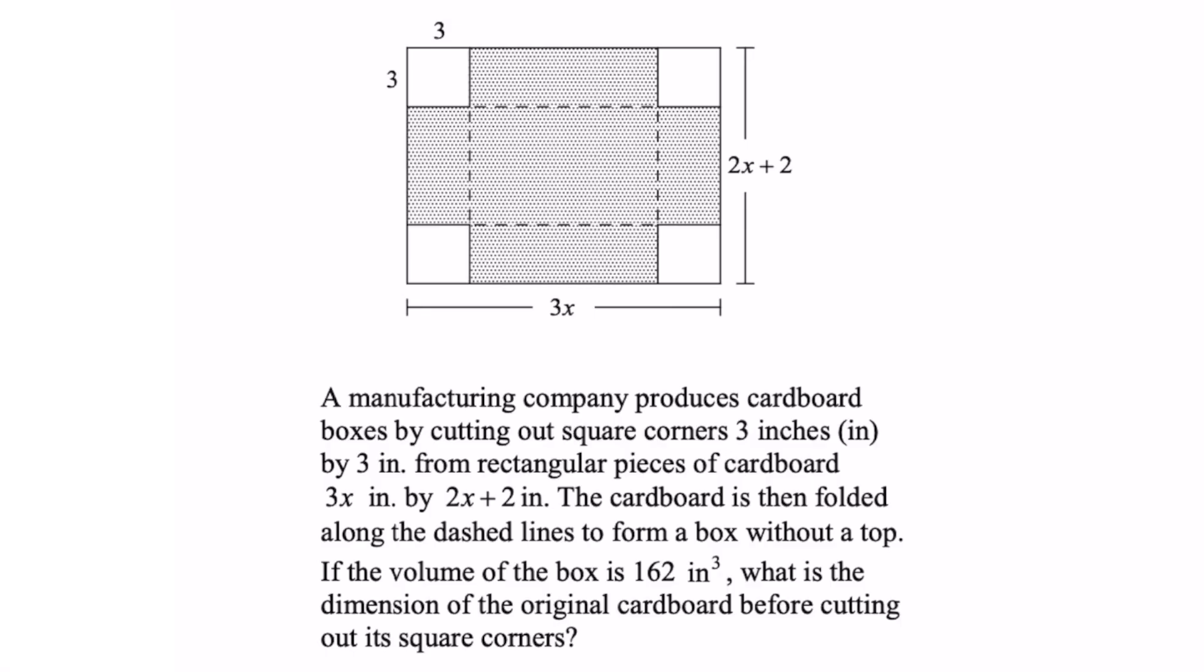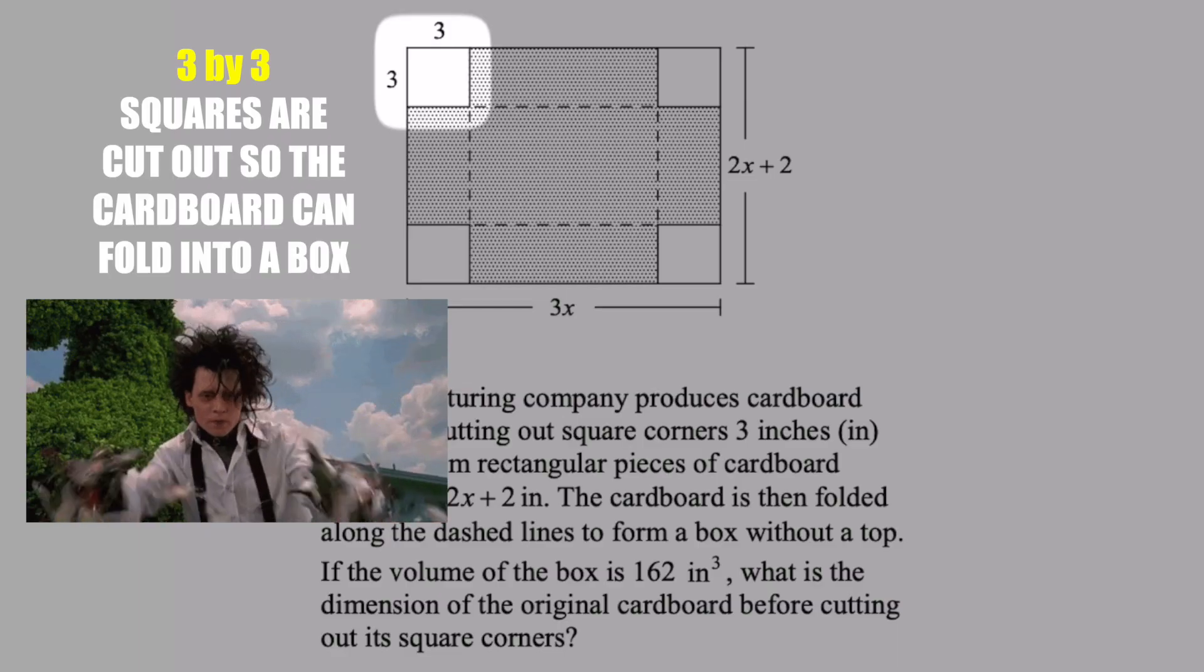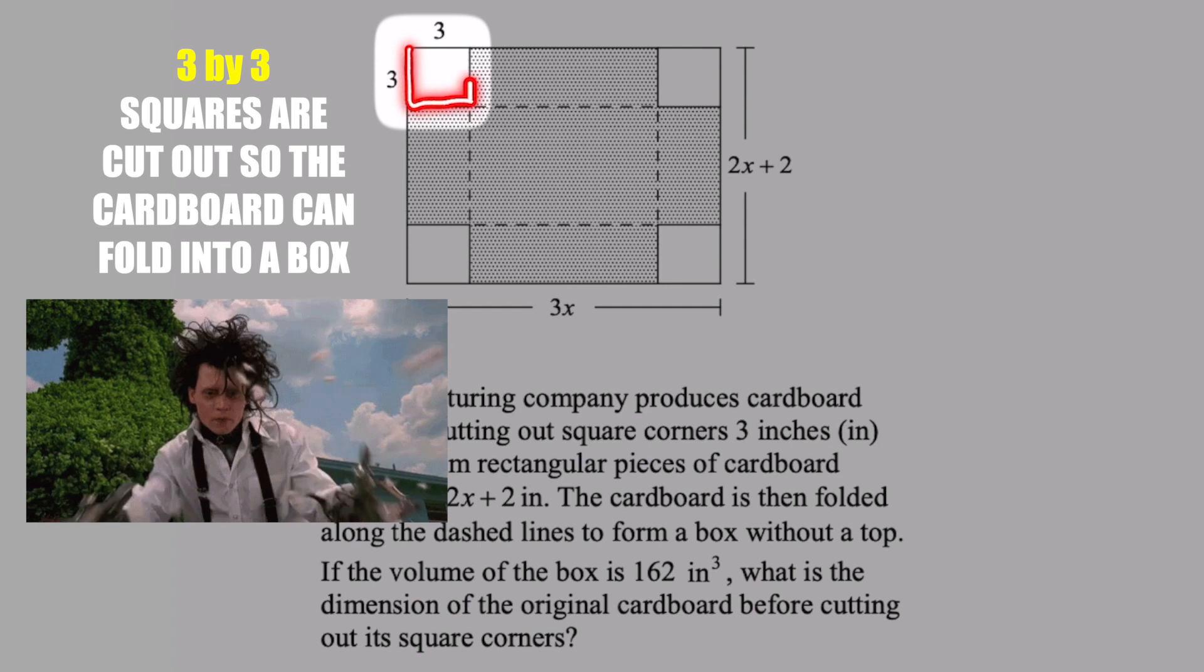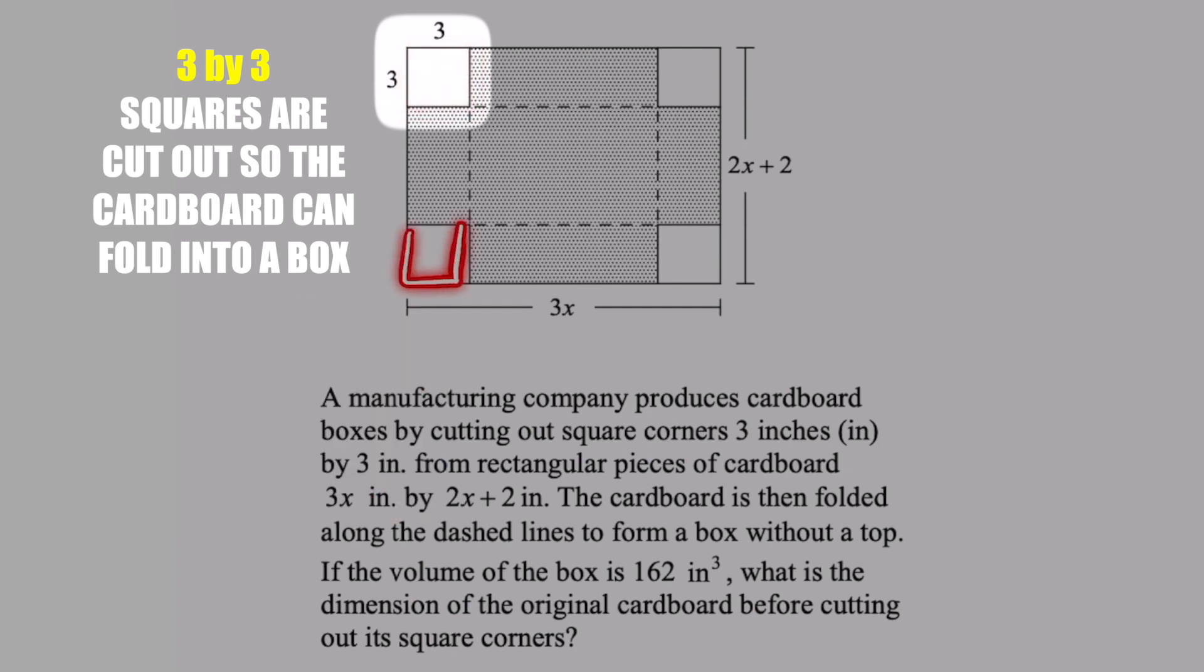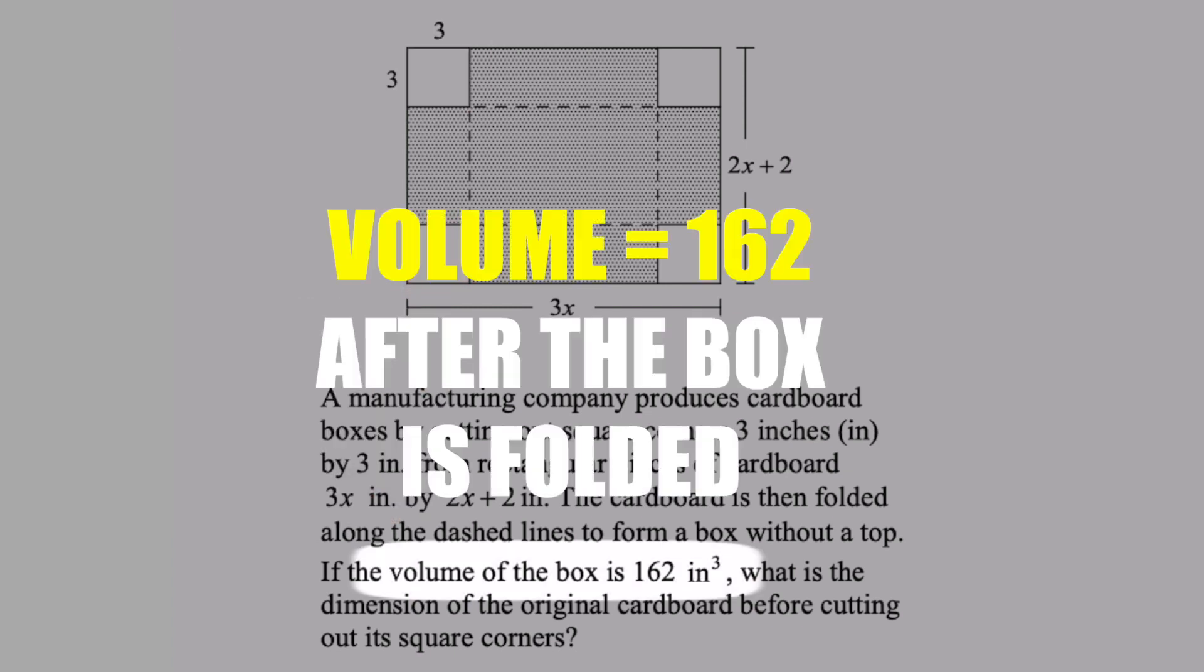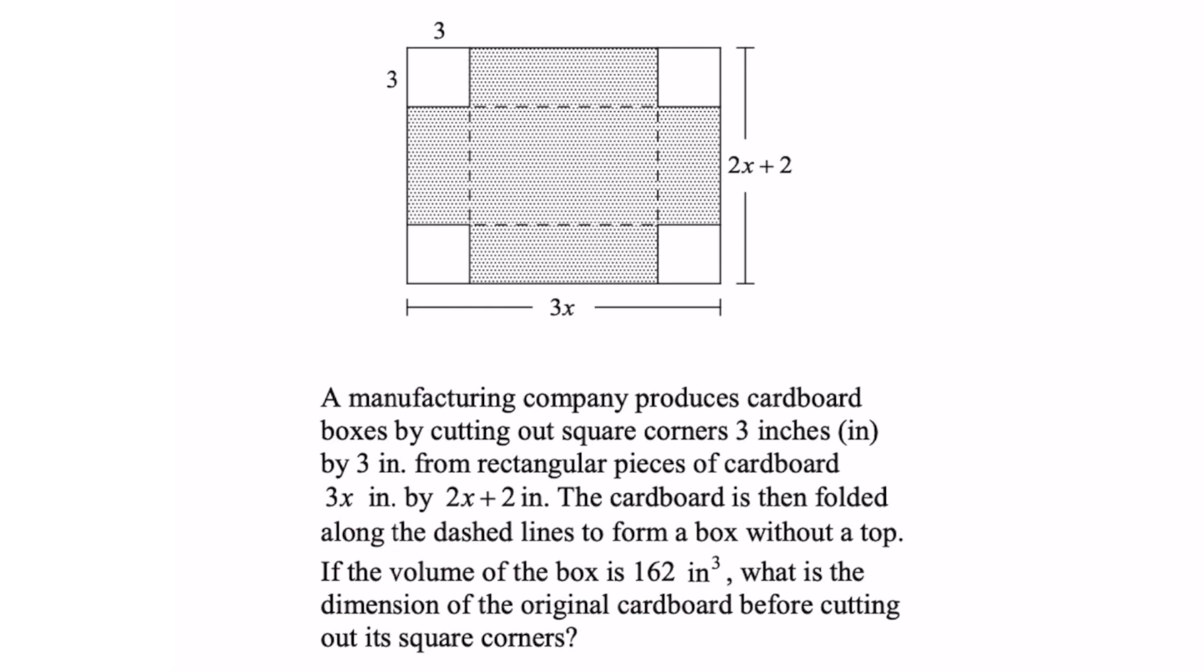We got a manufacturing company that produces cardboard boxes. The cardboard box has a cutout of a three by three square on each corner. Then they're going to fold that up without a top. The volume of the box is 162 inch cubed from the given statement. What is the dimension of the original cardboard box before cutting out its square corners?